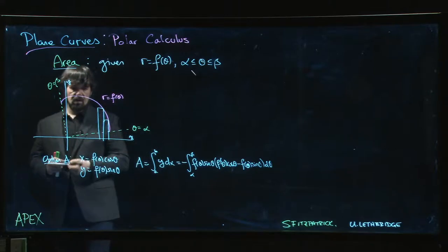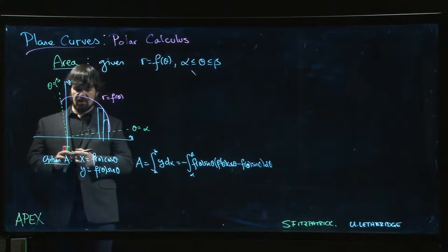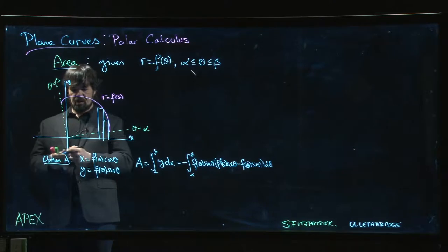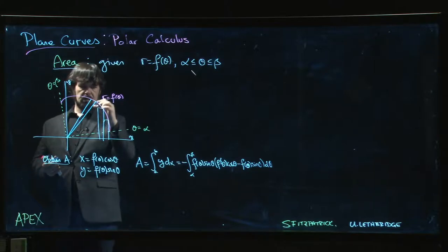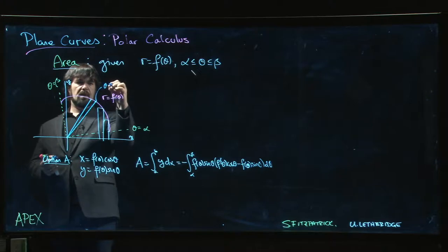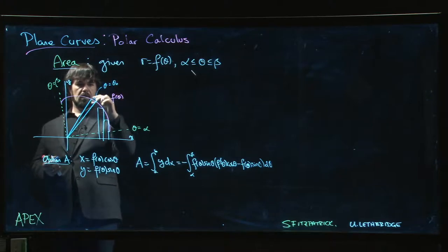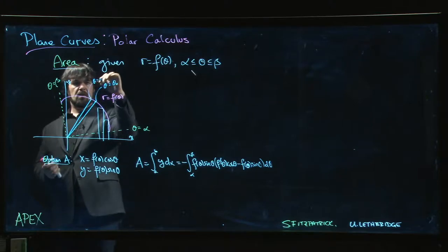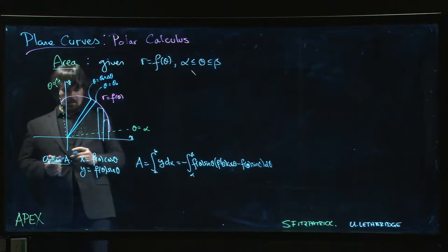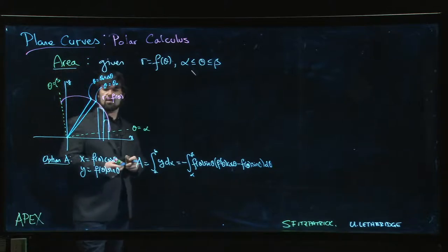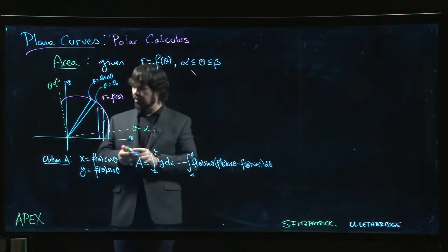So rectangles aren't actually the right thing. This is not the way to go if you're finding area for a polar curve. What you really want to do are pie wedges. You want to go like this, you want to go out like that. So here would be some theta naught and this would be theta naught plus delta theta.